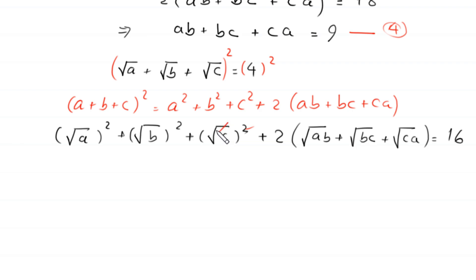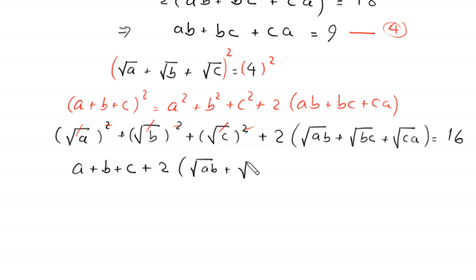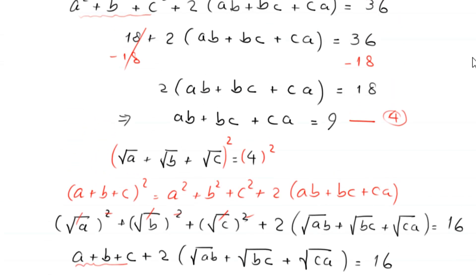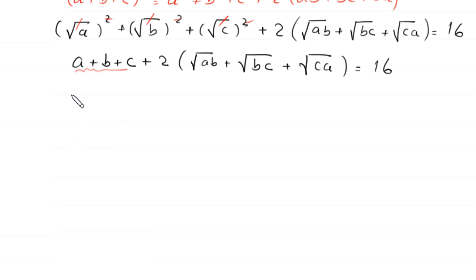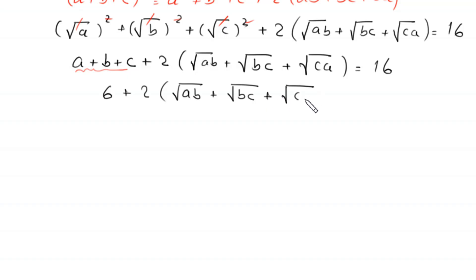The squares cancel with the square roots, leaving a plus b plus c plus 2 times (root(ab) plus root(bc) plus root(ca)) equals 16. We replace a plus b plus c with 6 from equation 1, giving 6 plus 2 times (root(ab) plus root(bc) plus root(ca)) equals 16.